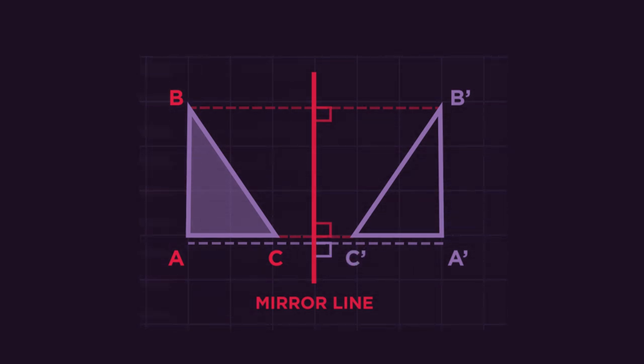Reflecting shapes is all about counting squares. Did you notice that the starting point is called A, and then the reflected point is called A-apostrophe?